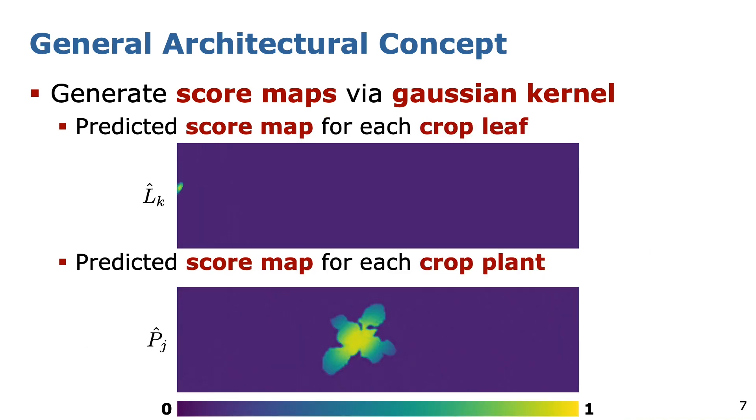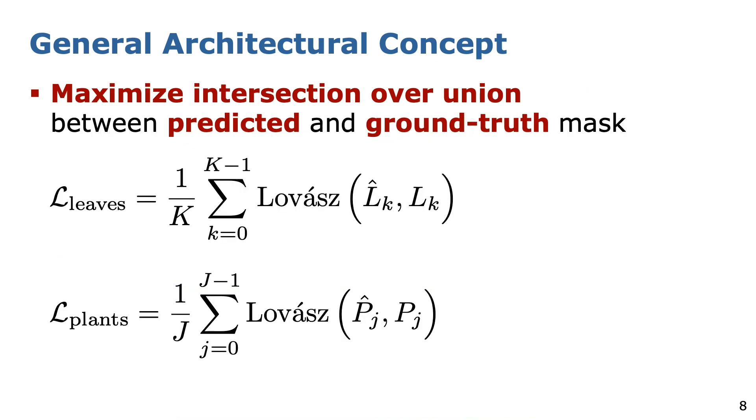At the top, we visualize the score maps for multiple leaf instances for a specific set of offset vectors and covariance matrices. At the bottom, we show the corresponding score maps for crop plant instances. Finally, we optimize the parameters of our network by comparing the predicted score maps and ground truth masks for all crop leaves and plant instances via the Lovász hinge loss, which effectively maximizes the intersection over union.